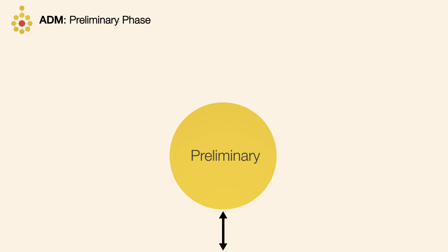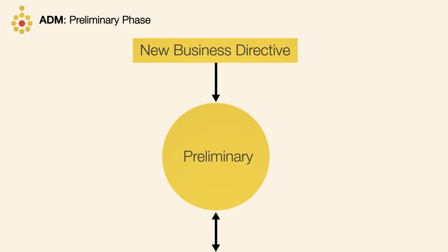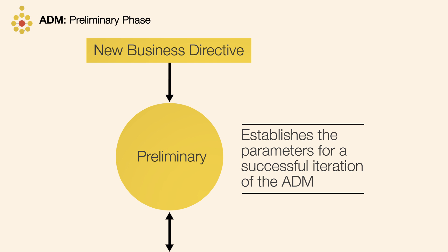The preliminary phase is required every time there's a new business directive for EA. You could say it establishes the parameters for a successful iteration of the ADM.